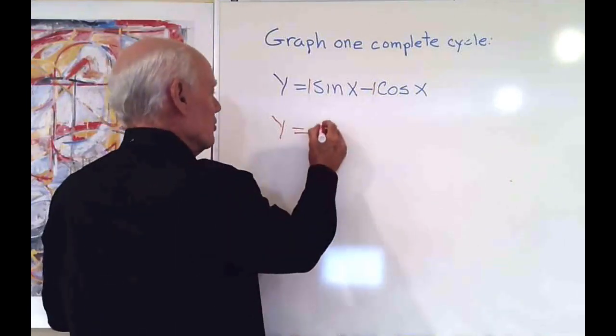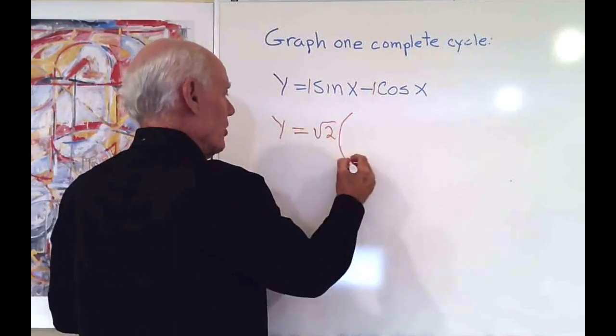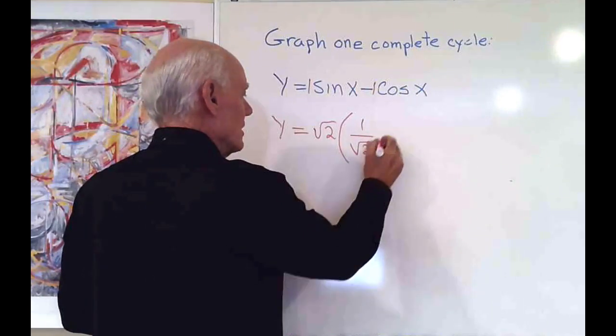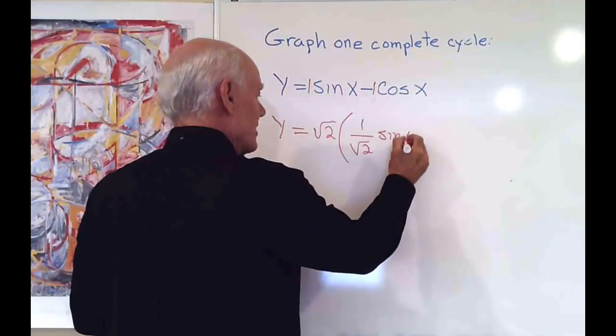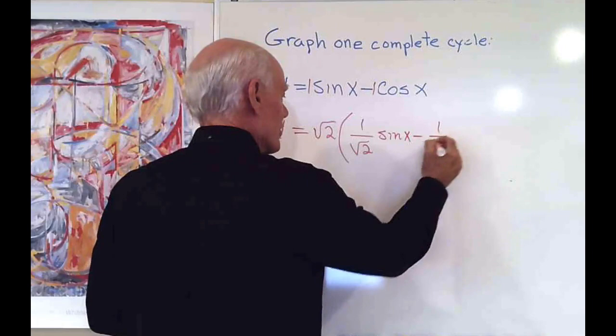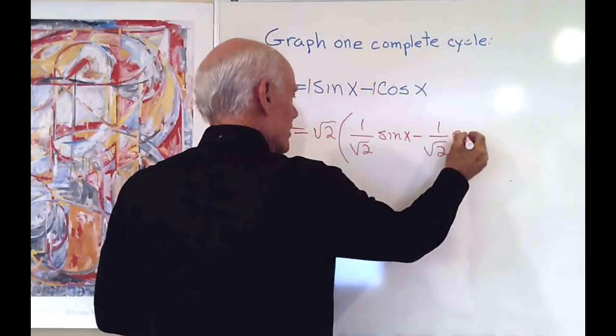That's going to be square root two. And then I'm going to multiply by one over square root two times the sine of x minus one over square root two times the cosine of x.